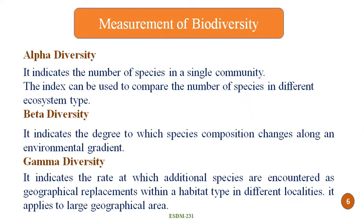Biodiversity is measured as alpha diversity, beta diversity and gamma diversity. Alpha diversity indicates the number of species in a single community — that is richness or evenness of species — and the index can be used to compare the number of species in different ecosystem types. Beta diversity indicates the degree to which species composition changes along an environmental gradient. Gamma diversity indicates the rate at which additional species are encountered as a geographical replacement within a habitat type in different localities, and it is always applied to large geographical areas.